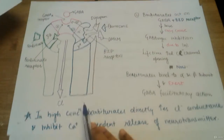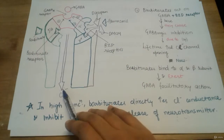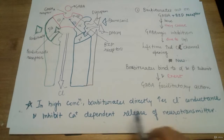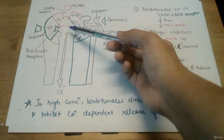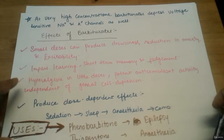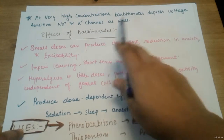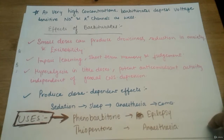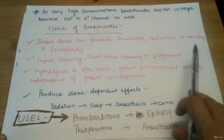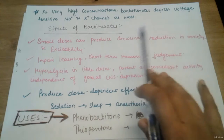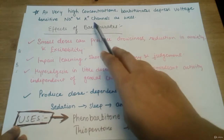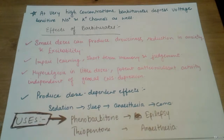At very high concentrations, barbiturates act directly on the chloride channel and directly increase chloride conductance, leading to inhibition of calcium-dependent transmitter release. Additionally at very high concentrations — as seen in addicts — barbiturates start depressing the sodium and potassium channels as well. The system becomes very much depressed; the person becomes lethargic and unable to function. This can be called a CNS shutdown.